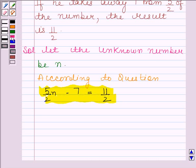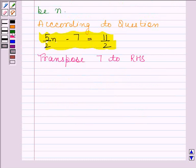Let's solve this equation. We will first transpose 7 to right side. Thus, we get 5 by 2 N equals to 11 by 2 plus 7.